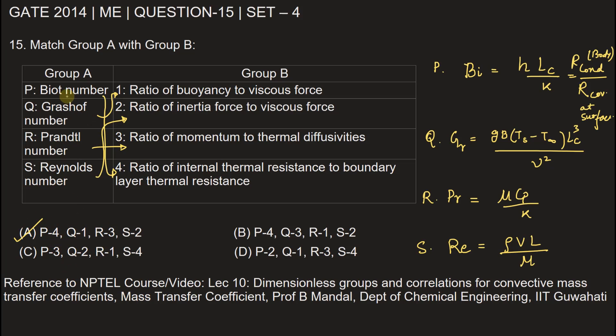For more information on these dimensionless numbers, you can find them in lectures on heat transfer. You can refer to lecture number 10, Dimensionless Groups and Correlations for Convective Mass Transfer Coefficient, by Professor B. Mandal of the Department of Chemical Engineering at IIT Guwahati.